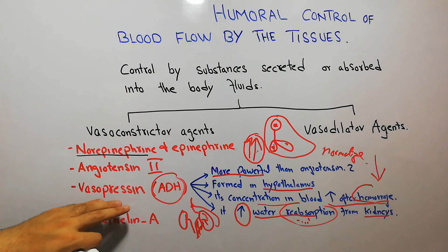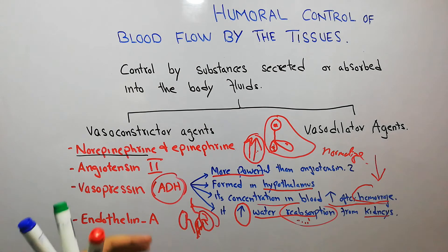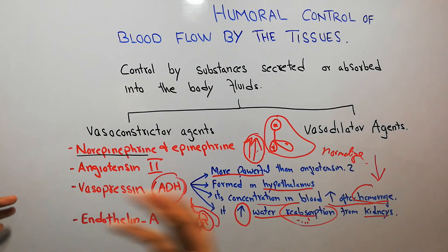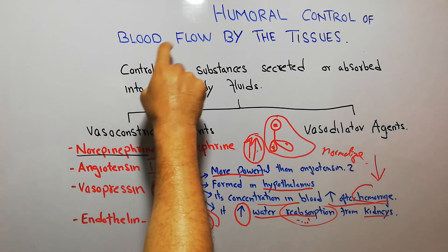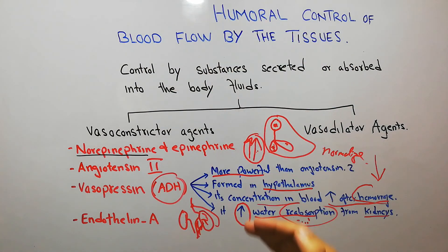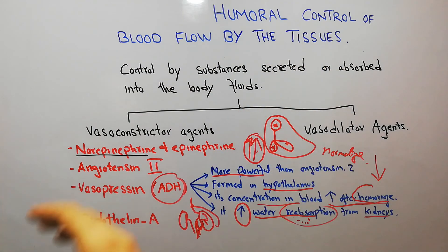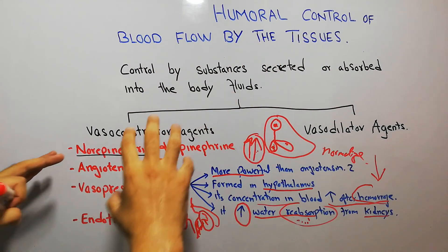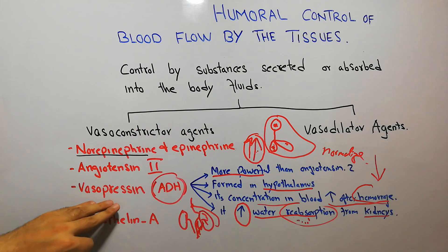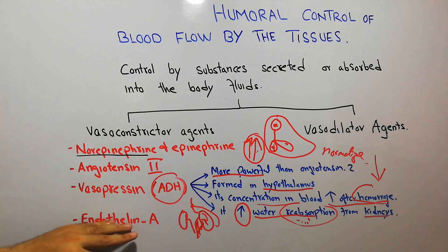All these functions are basically trying to normalize blood flow to the tissues. The tissues send signals to the brain for secretion of ADH, so in a way, the tissues are trying to maintain their blood flow with the help of these agents, and vasopressin is one of those very important agents. In the next lecture we are going to discuss endothelin. Thanks for watching.